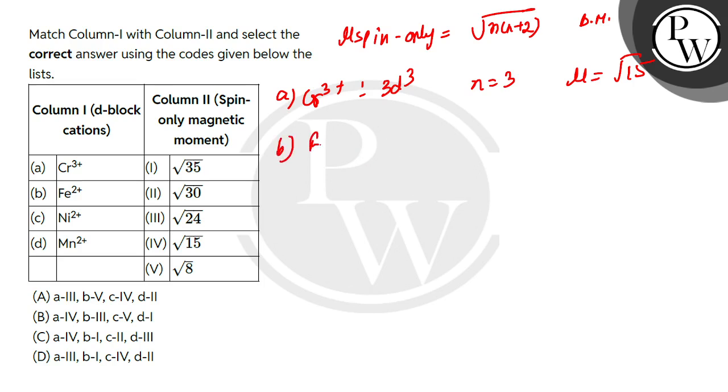Let's see Fe²⁺. So configuration will be 3d⁶. Number of unpaired electrons is 4. So μ ki value kya ho jayegi: √(4(4+2)) = √(4×6) = √24.